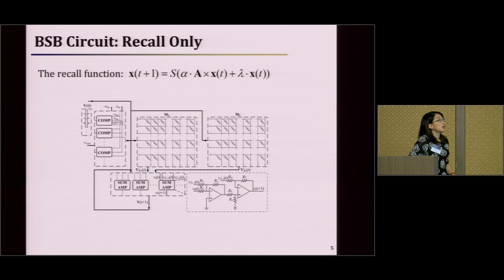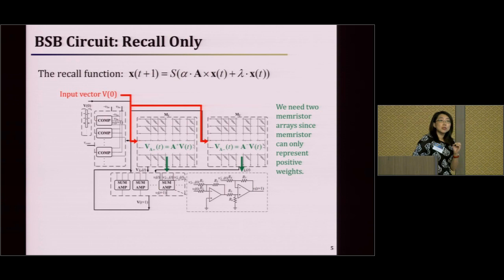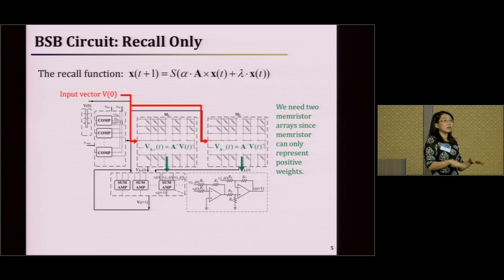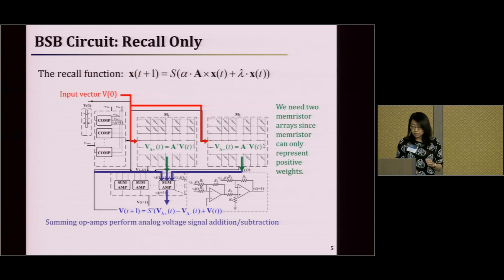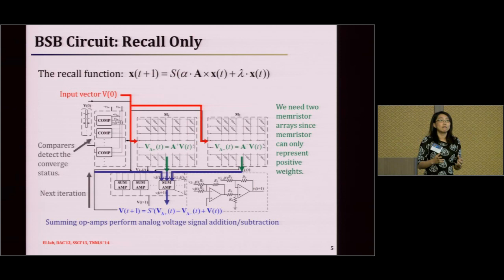In these structures, we supply the input vectors as voltages to the crossbar arrays. In the original software algorithms, the matrix has positive and negative values. Since memristor devices are physical devices, we can only supply positive values. So in this work, we separate the matrix into two matrices — one to represent positive values and one to represent negative values conceptually — and in reality we just do the subtraction to get the real values. At the end of the crossbars, we utilize summing amplifiers to perform analog operations for addition, subtraction, and so forth. The result goes through comparators to decide whether each term has converged or should be sent back to the input for further iteration.